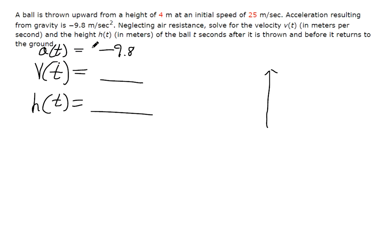So we can find out v of t. V of t would be the anti-derivative of the acceleration. The velocity is the anti-derivative of the acceleration, in this case with respect to time. So we get negative 9.8t plus some constant c, and we're given initial value information to help us find that constant c.